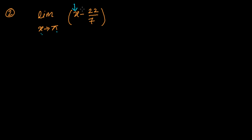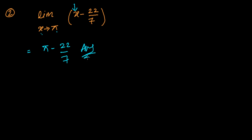Since there's no indeterminate or indefinite form, I just plug in x as pi. I get pi minus 22 over 7, and that is my answer. This is a definite value, so no problem at all.